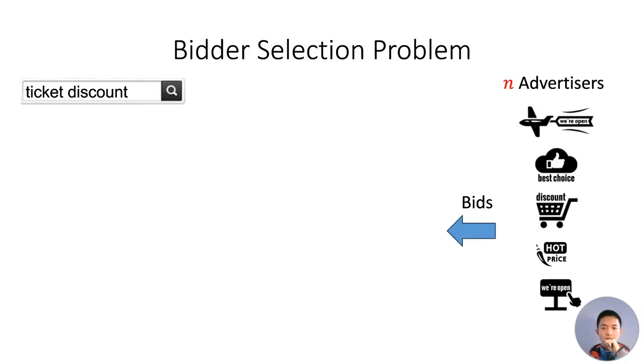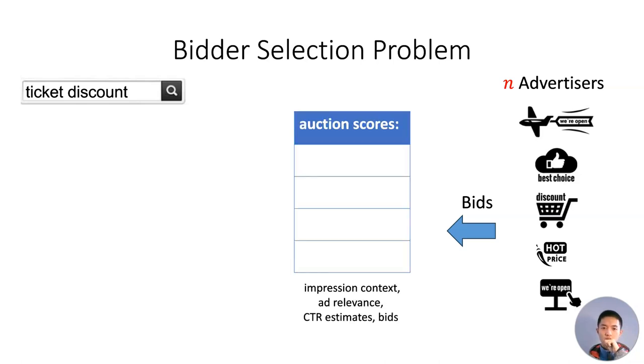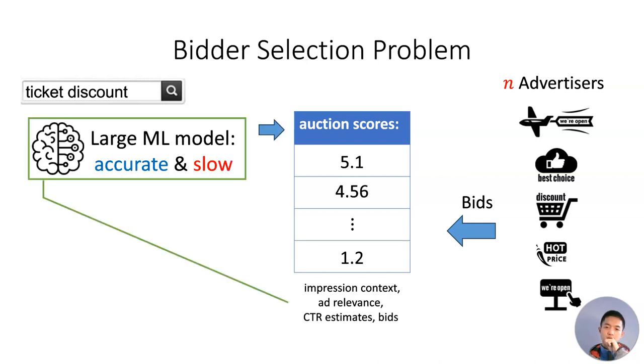The bidder selection is a problem faced by modern online advertising companies. When a user search comes, the company needs to choose some ads from N advertisers to display. The criterion of selection is called the auction score, which is computed from various factors by a large machine learning model. This machine learning model is usually very slow, given that the search results must appear within a few milliseconds.